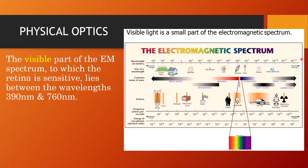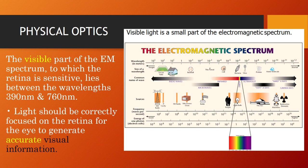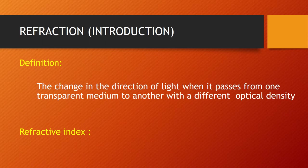The visible part of the electromagnetic spectrum is a very big range, but the human eye can see only a very small part of it. The retina is sensitive only to light between 390 nanometers to 760 nanometers. This visible spectrum should be correctly focused onto the retina so that the retinal system can generate accurate vision. When light travels and passes from one transparent medium to another with a different optical density, this change is called refraction.